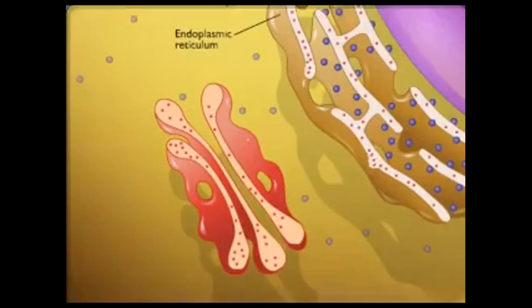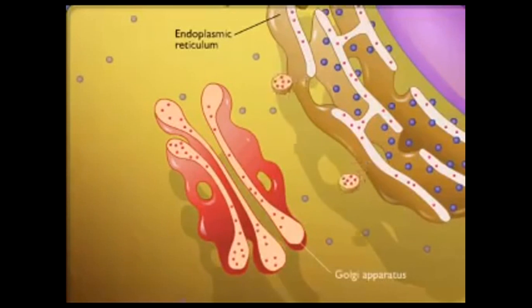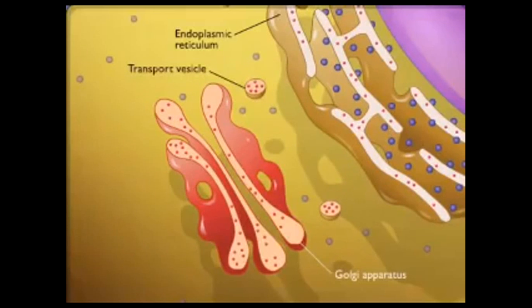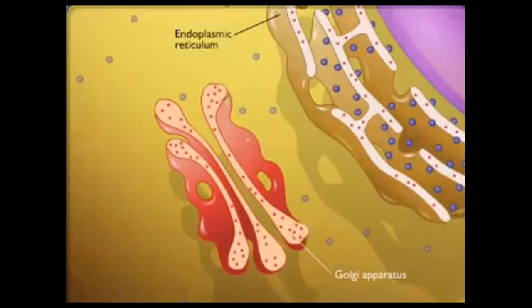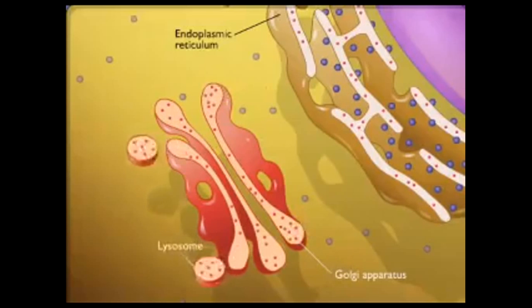These enzymes are then transported to the Golgi apparatus by transport vesicles. The lysosomes arise from the Golgi apparatus.